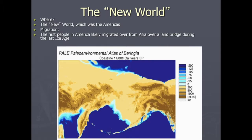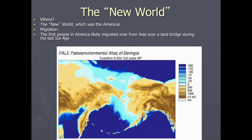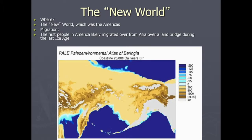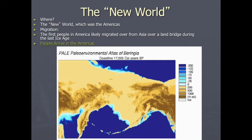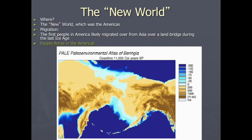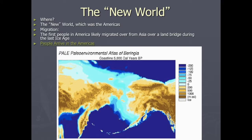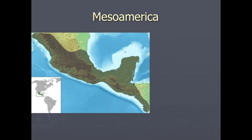Humans were theorized to have originated in the so-called old world. The question is how did they end up in the Americas — how did Native Americans end up in present-day United States, North America, and South America? The major idea is that they migrated over the land bridge you see in the visual, probably following animal herds. Once they arrived, they didn't just stay in Alaska; they spread all across North and South America over time.